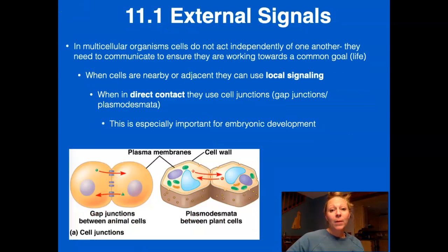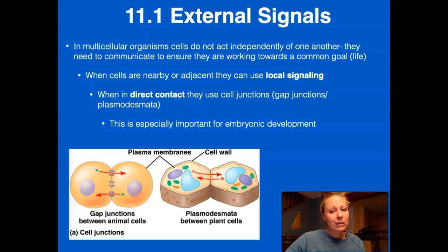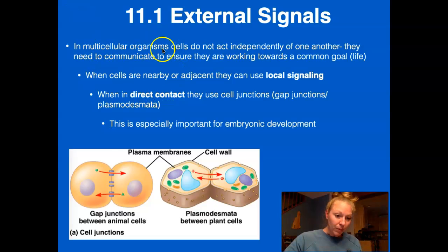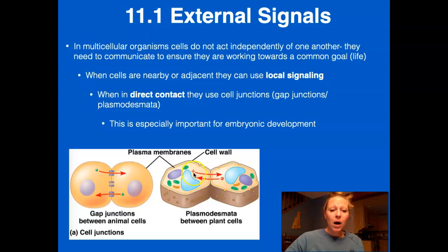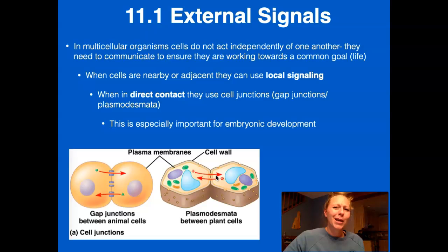In multicellular organisms, cells do not act independently — they need to communicate with one another as well. Cells can be placed very closely, slightly distant, or very far apart; the cells in your toes need to communicate with the cells in your nose. For closely placed animal cells, we have gap junctions through which signaling factors can be passed. For plant cells, plasmodesmata serve this role. This is very important for embryonic development, where cells are communicating often, so you'll find lots of gap junctions during that process.